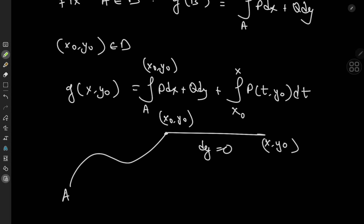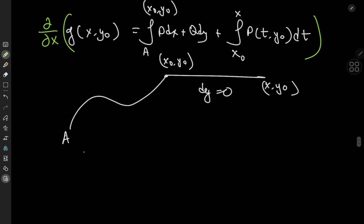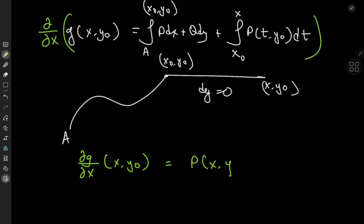Let's analyze what we've cooked up. The first integral is just a constant because the points a and (x₀, y₀) are fixed in our setting. So what we have is a function of x, and we can differentiate partially with respect to x: ∂g/∂x evaluated at (x, y₀) equals — the constant integral contributes 0 — plus p(x, y₀).